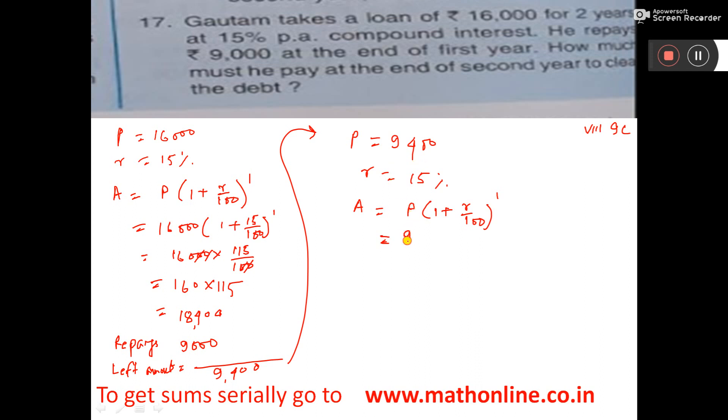P means this one, 9,400, 1 plus R means 15 by 100. So do the calculation, 9,400 into 115 by 100, this will cut, so 94 into 115. That will give you the answer.